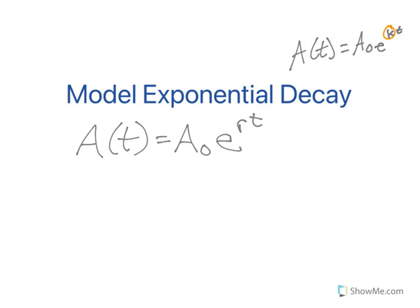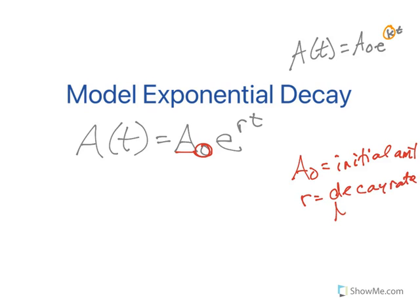But just remember, A₀ gives us the initial amount. It means the amount at time zero, which is when we start. The r is the decay rate, and because we are decaying, it's going to be negative. So make sure your decay rate is negative, and then t is your time.